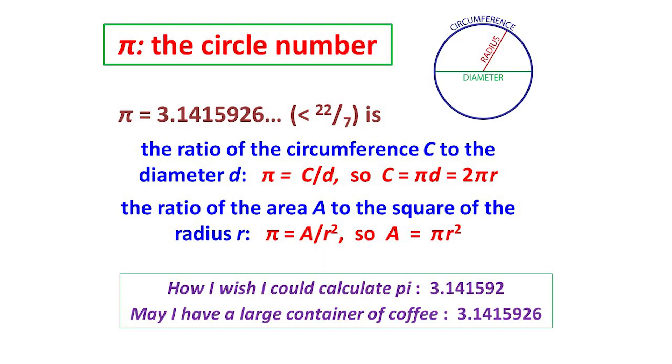The number pi is about 3.1415926 and is a little less than 3 and 1/7, or 22/7. In geometry, it's the ratio of the circumference of a circle to its diameter – pi equals C/d, and so C equals pi times d.